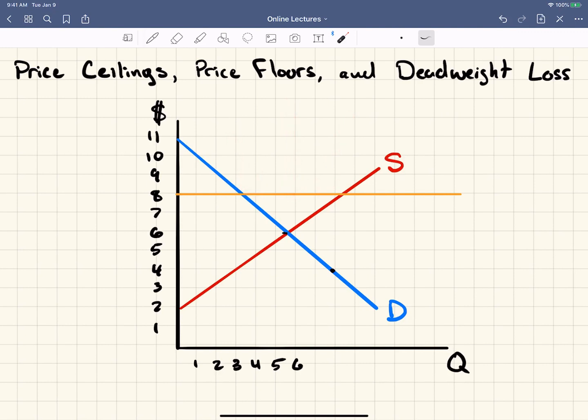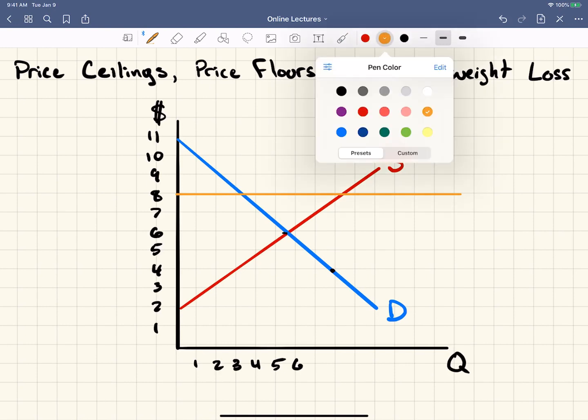This also creates a problem because now at this price, all these people want to supply this good or service, but only this amount of people are demanding this good or service. And so the gap between these two points here and here, we call a surplus.